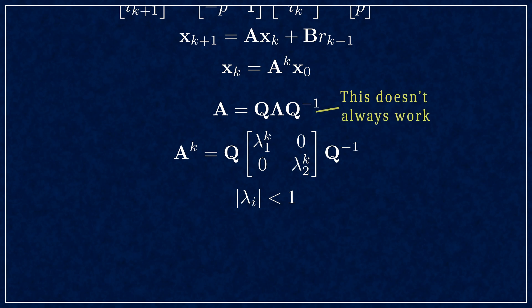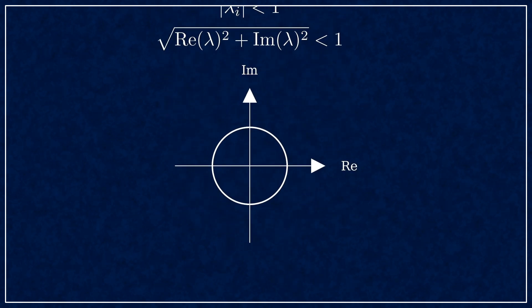I have to mention that not all matrices can be diagonalized like this, you might need to use the Jordan form instead, but the condition for the eigenvalues is general. The only inconvenience is that the eigenvalues tend to be complex, so you need to take the complex absolute value. This means that the eigenvalues must lie inside the unit circle on the complex plane.